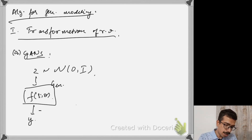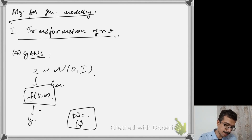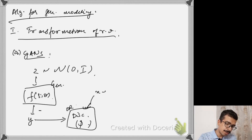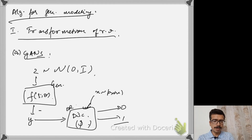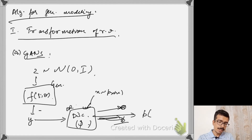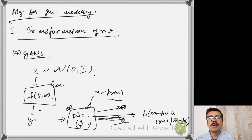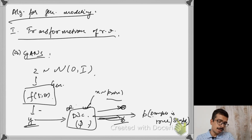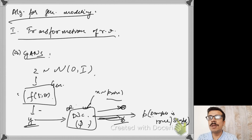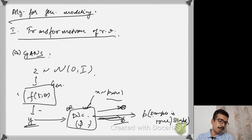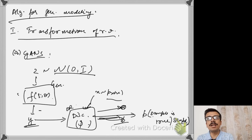GANs perform adversarial training. We have a generator network, and additionally a discriminator network with its own parameters φ. The discriminator can take one of the generated samples or one of the samples from the data, and it outputs either a zero or one — or equivalently the probability that the sample is true. We are never performing explicit density estimation; instead we perform a transformation of random variables.